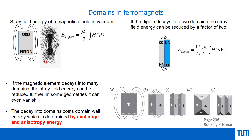If we consider a ferromagnetic material by analogy, you can think of it like a bar magnet with stray fields coming out from one side and going into the other. These stray fields are drawn with very thick lines, meaning the energy involved is also very high. The system will not prefer such a situation because the energy is too large and it wants to minimize the stray fields.